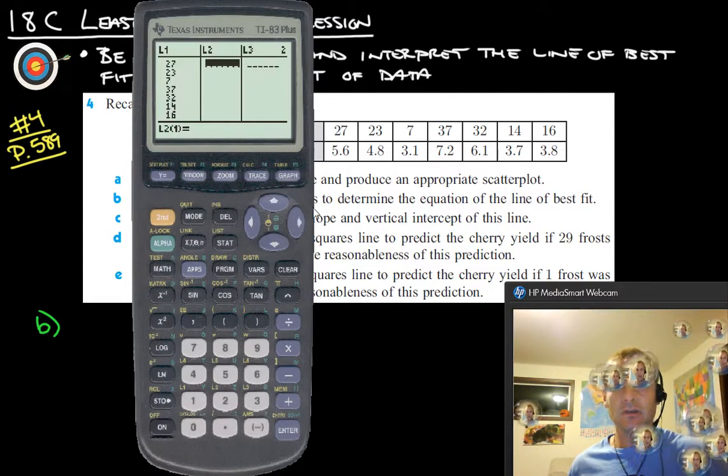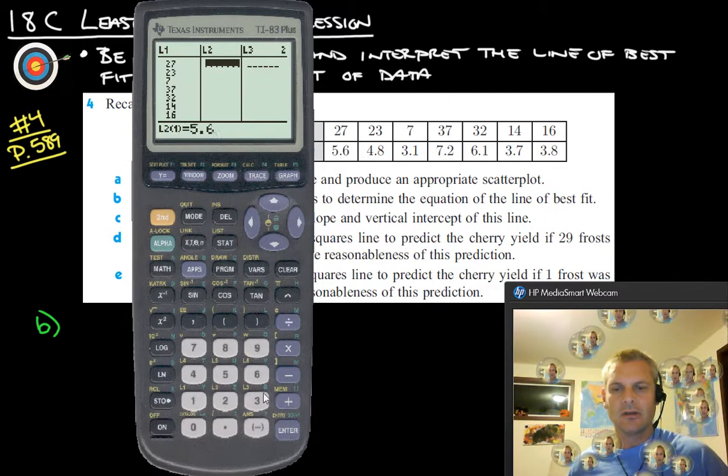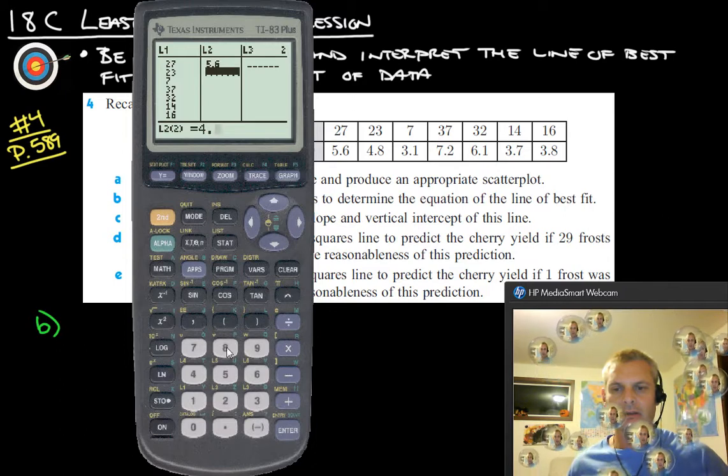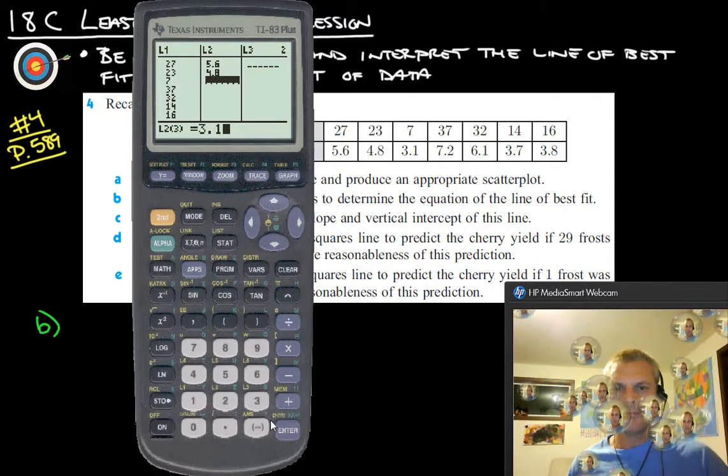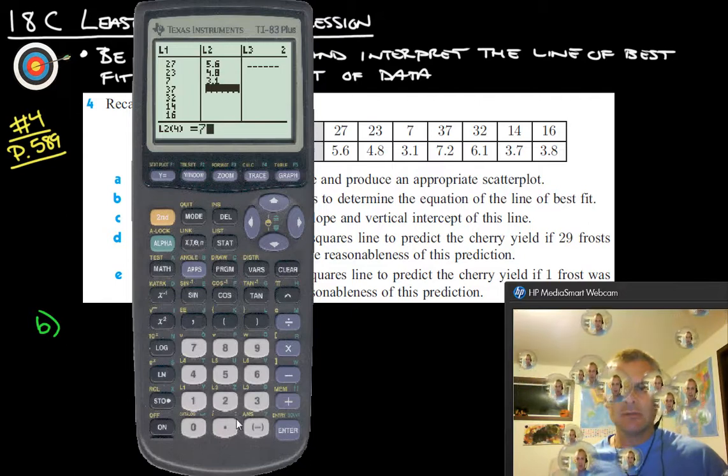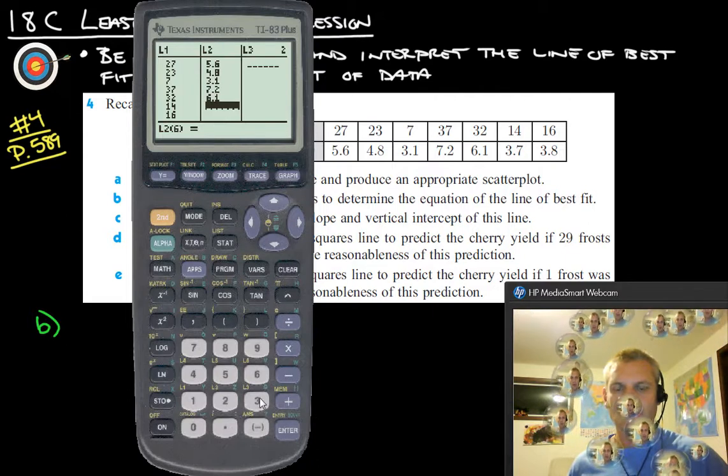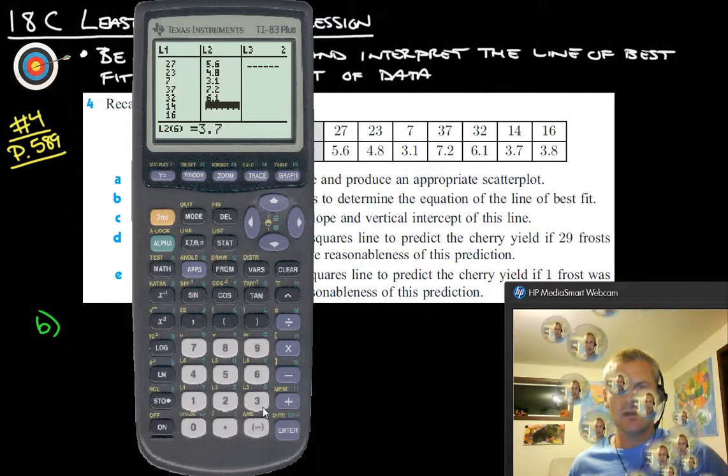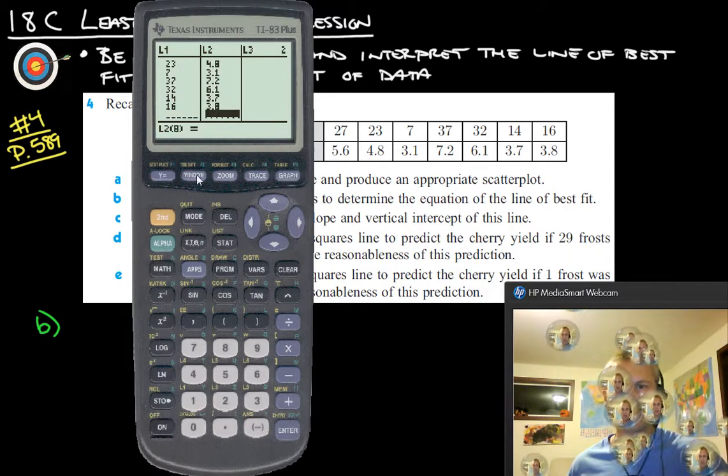And now we're going to go over to list two and enter in all this data. So there's our 5.6, 4.8, 3.1, 7.2, 6.1, 3.7, and 3.8.